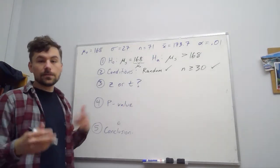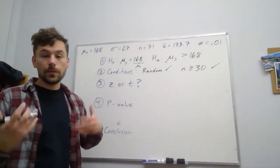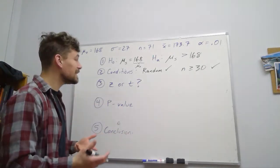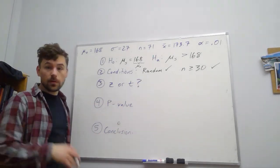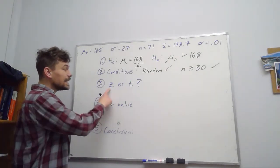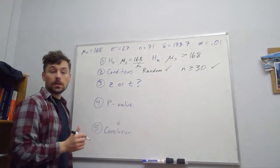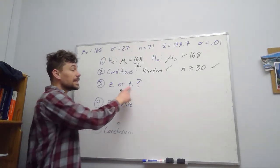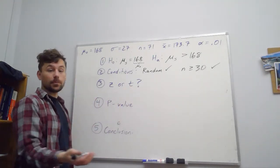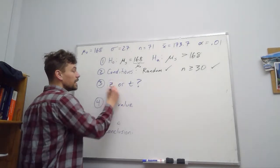Okay, the next question we want to ask, we want to find our test statistic. We want to know, are we using z or are we using t? Well, we've seen this before in the course, and we said, well, z if I have σ, the population standard deviation, t if I'm using s, the sample standard deviation. So, okay, I guess we're using z.